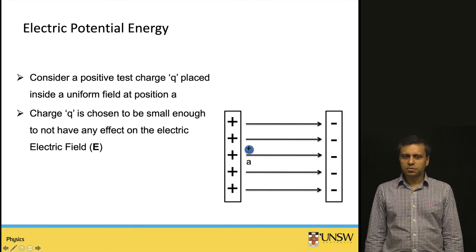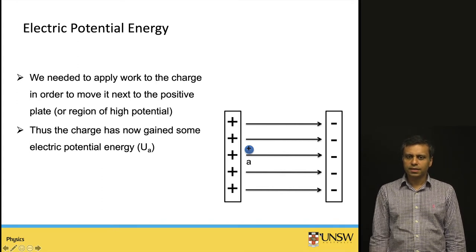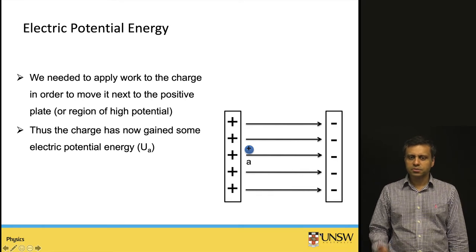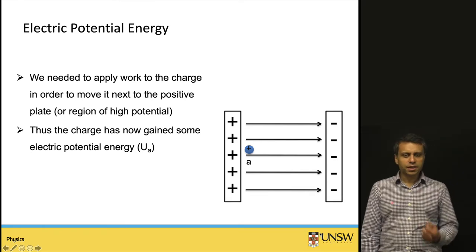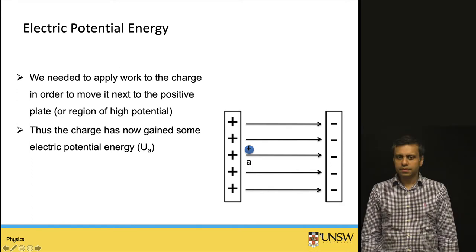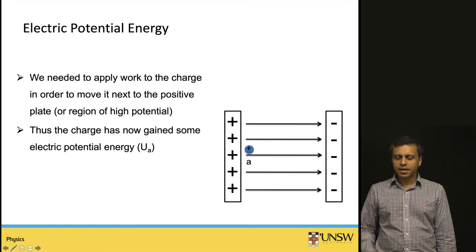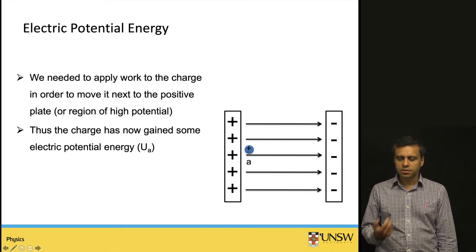When we move this charge close to the positive plate, we do work on it, transferring energy that is stored as electrical potential energy. If we release the charge, the positive plate pushes it to the right and the negative plate pulls it to the right. The charge starts moving, its velocity increases, and so its kinetic energy increases — this is a case of energy conservation.